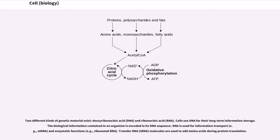Two different kinds of genetic material exist: deoxyribonucleic acid, DNA, and ribonucleic acid, RNA.